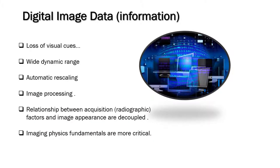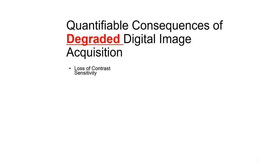Digital data differs from a digital image. With digital data, we lose visual cues. We can have a wide dynamic range with automatic rescaling and image processing dictated by the computer in the modality. The relationship between digital acquisition and image production are decoupled.